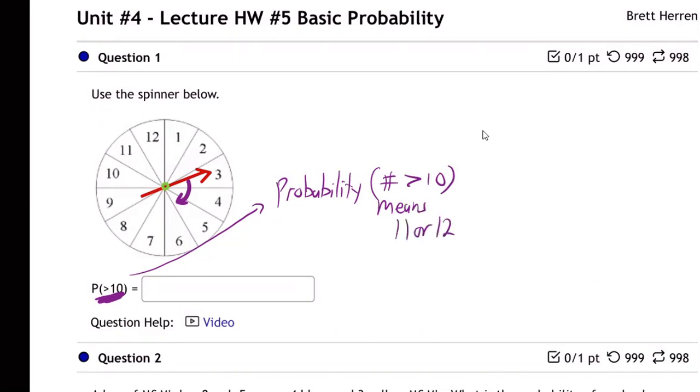11 or 12, doesn't it? If it's greater than 10, then it's 11 or 12. And so what they're really asking about is what's the chance it's going to land in this 11 region or the 12 region?